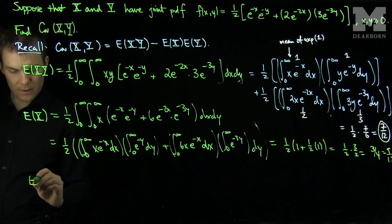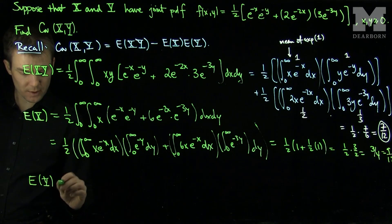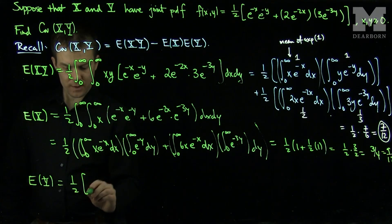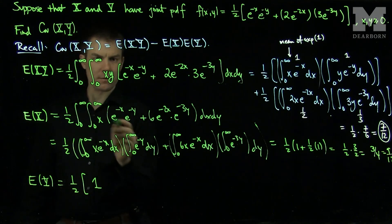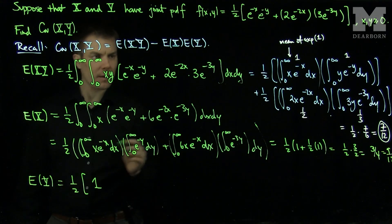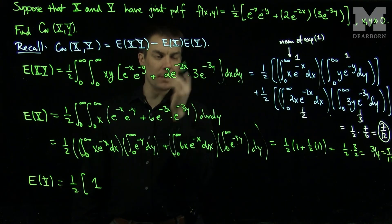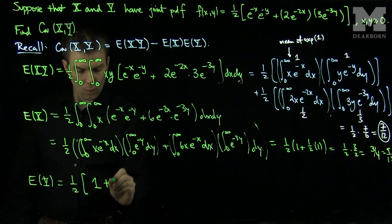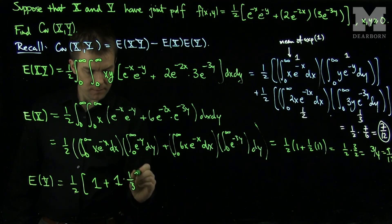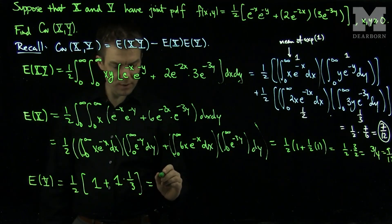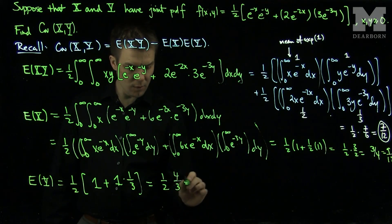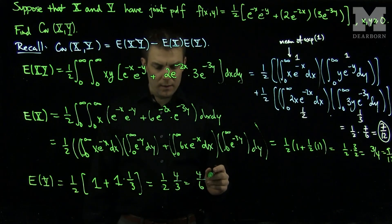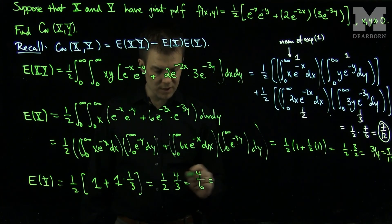The expected value of y we can compute similarly. This will be one-half times: the first integral term with a y there gives one, and the second term gives the mean of an exponential with parameter three, which is one-third. So inside parentheses we have one plus one-third, which is four-thirds. Therefore E[Y] = one-half times four-thirds = four-sixths, or two-thirds.